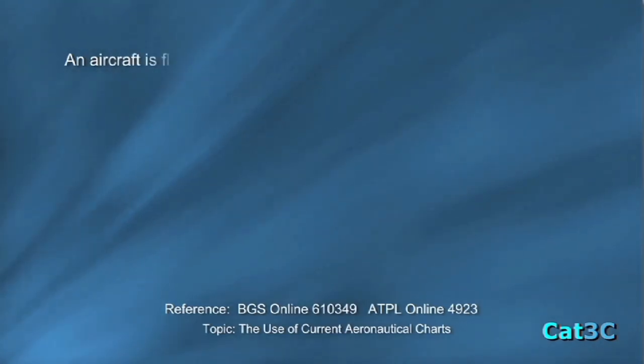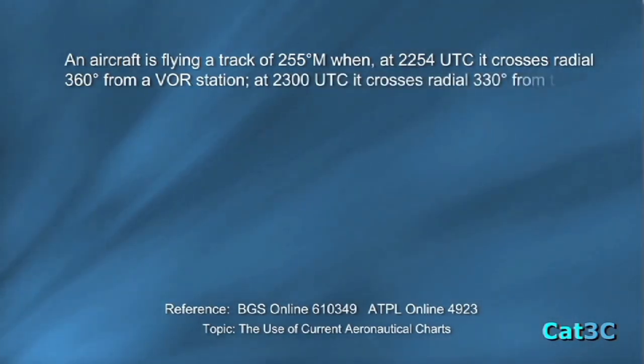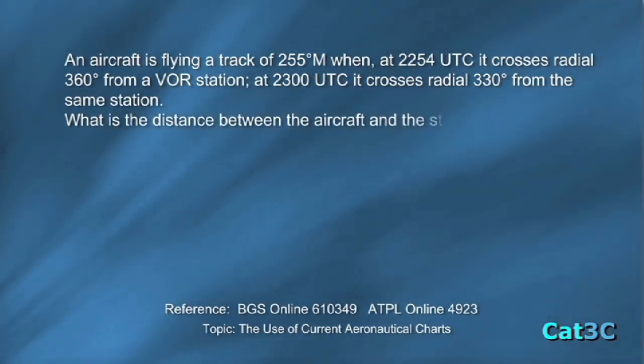An aircraft is flying a track of 255 degrees magnetic. At 2254 UTC, it crosses the 360 degree radial from a VOR station. At 2300 UTC, it crosses the 330 degree radial from the same station. At 2300 UTC, what is the distance between the aircraft and the VOR station?